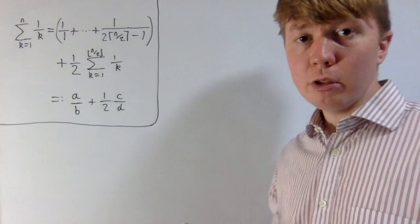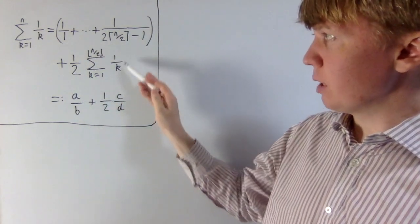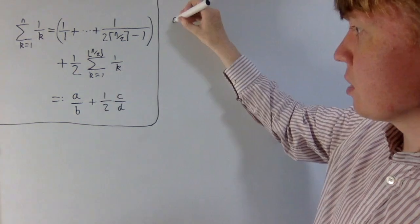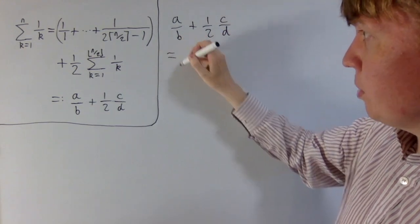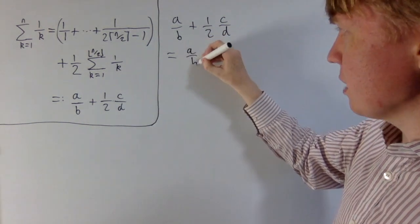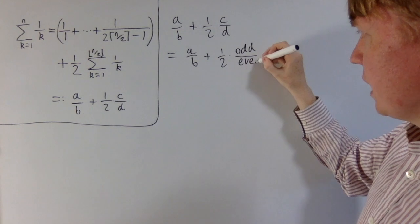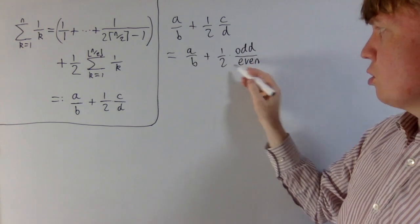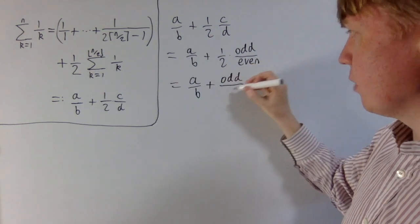Now we've written the sum in a different form. For convenience, we write the sum of all odd terms as a over b after simplification, and we write the simplified sum of the even terms as c over d. So our total sum is a/b plus (1/2)(c/d). By our inductive hypothesis, c over d — when simplified — is an odd number divided by an even number. So we can write this as a/b plus (1/2) times odd over even. Since 1 times odd is still odd and 2 times even is still even, this becomes a/b plus odd over even.